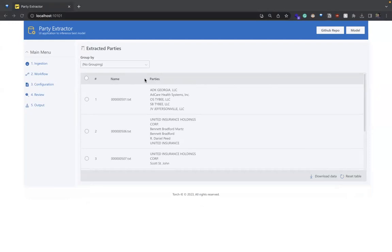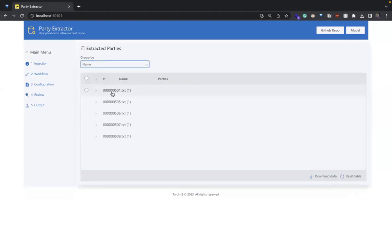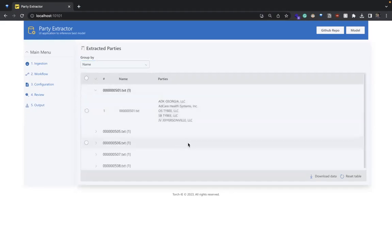Now, you can observe the system's outputs. For each document, we have extracted the top five parties associated with it. You can utilize the search bar to look for specific parties, and we also offer the option to group them based on party names. We have additional functionalities planned for future implementation, as mentioned in our roadmap.